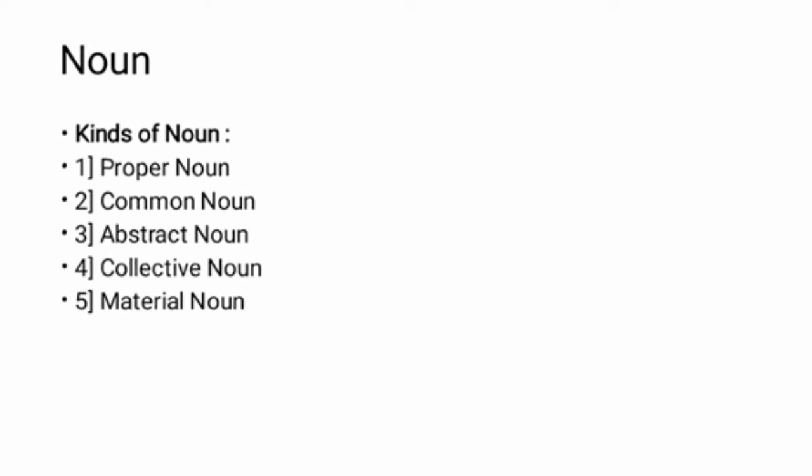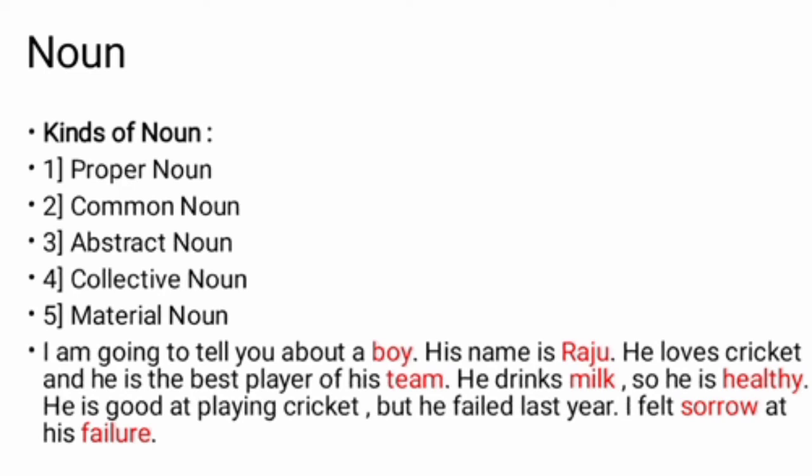Let us see a paragraph where some nouns are in red color. I am going to tell you about a boy. A boy means this is the common noun. I am going to tell you about any boy. His name is Raju. But the name of that boy is Raju. Here, Raju is the proper noun. And it begins with capital letter.